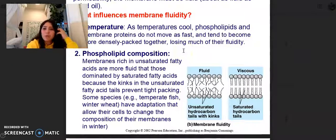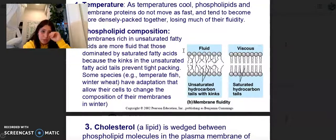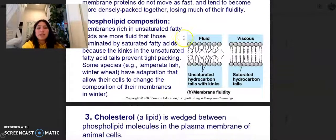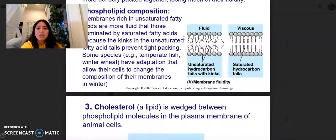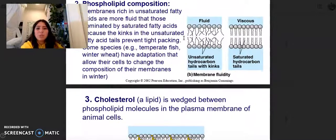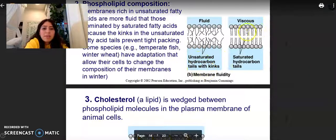Phospholipid composition: membranes rich in unsaturated fatty acids are more fluid than those dominated by saturated fatty acids because the kinks in the unsaturated fatty acid tails prevent tight packing. Some species, examples temperate fish and winter wheat, have adaptations that allow their cells to change composition of their membranes in the winter. So fluid, the unsaturated hydrocarbon tails with kinks and then the viscous saturated hydrocarbon tails.